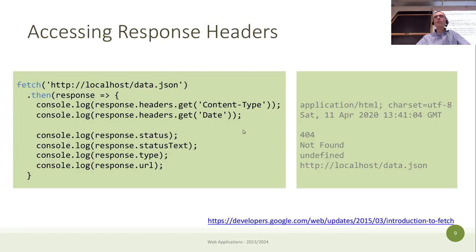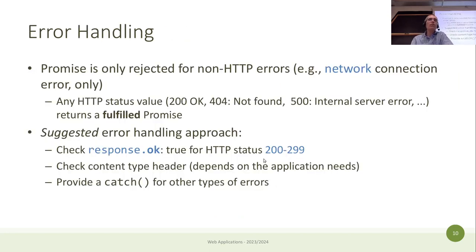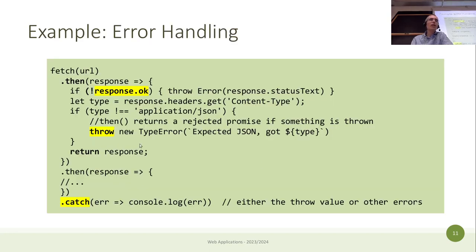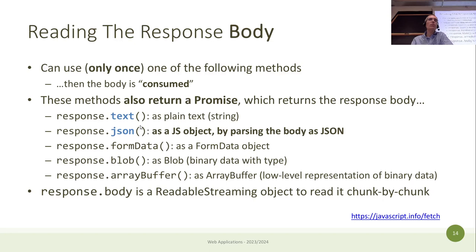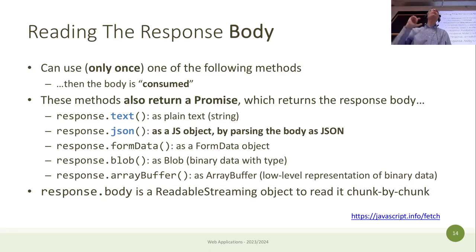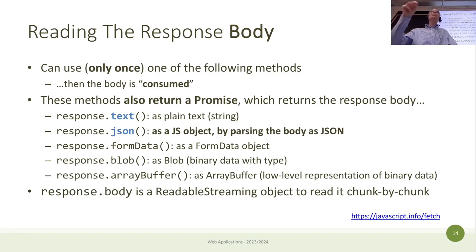There are quite a number of properties and methods on the response object. Since in our web application we always communicate using JSON format for both questions and answers, we will always use the `.json()` method, which takes the body of the response, interprets it as JSON, and creates the corresponding JavaScript object for us.